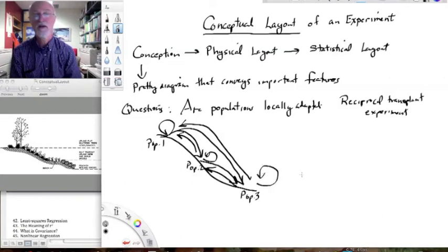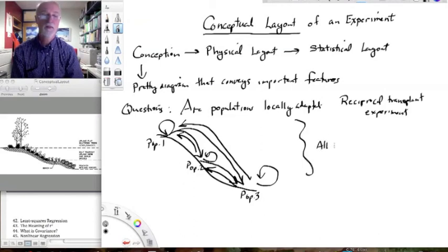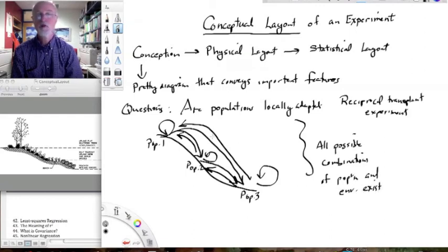I could certainly do better in PowerPoint with a little bit of time. But basically, this is showing all the transplants that we're doing in this particular experiment. And it's showing that all possible combinations of population and environment exist because I am moving plants. So, the arrows are showing movement of plants from one place to another. And I've got all of the possible arrows in this.